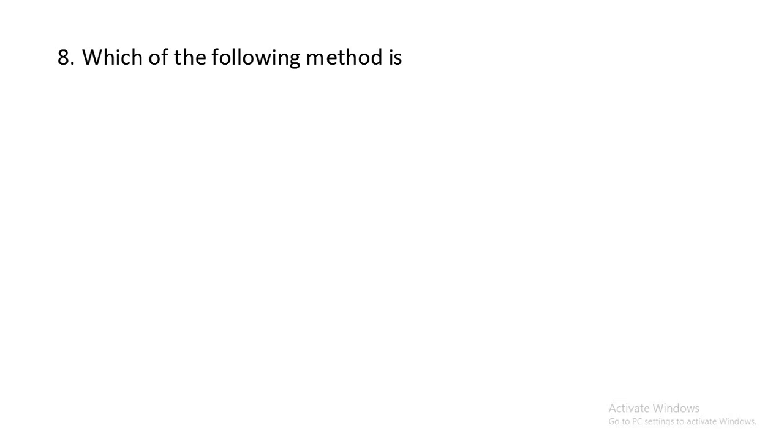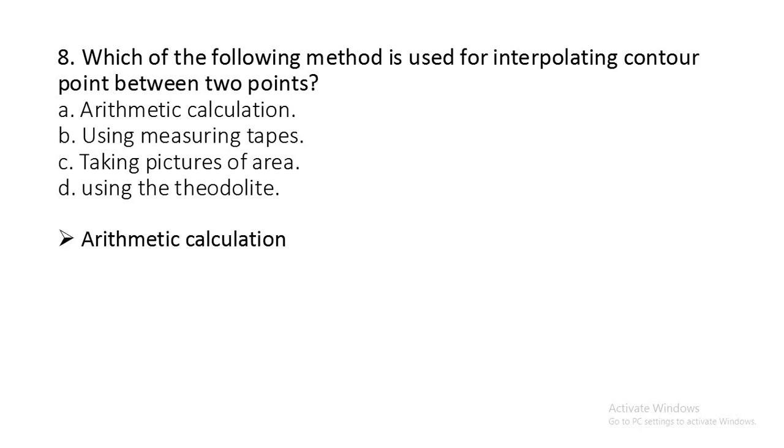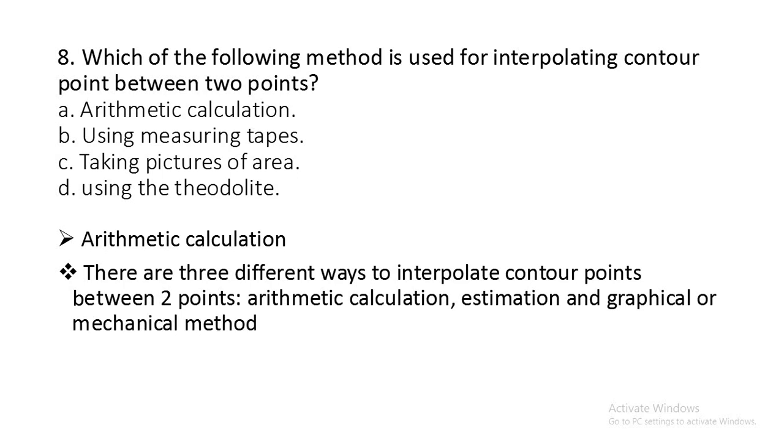Question number eight: Which of the following methods is used for interpolating contour points between two points? Arithmetic calculation, using measuring tapes, taking pictures of area, or using the theodolite? The correct answer is option A, arithmetic calculation method. There are three different ways to interpolate contour points between two points: arithmetic calculation method, estimation method, and graphical or mechanical method.